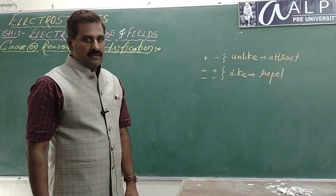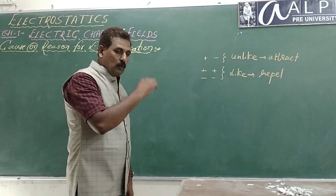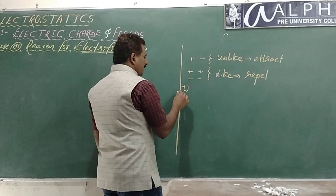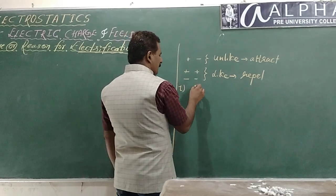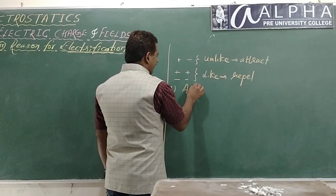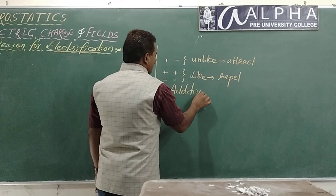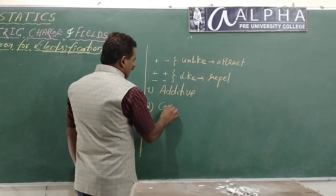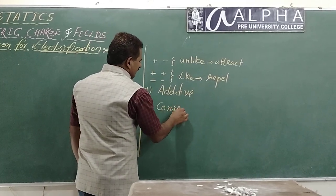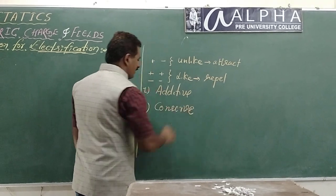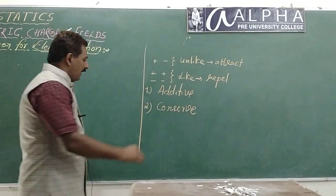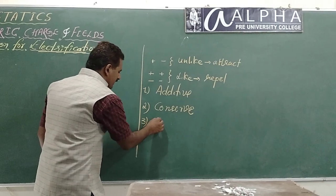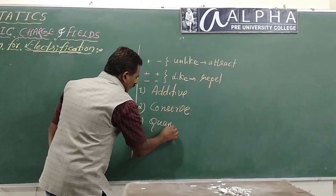And you learned some more properties of charge. Number one: the charging process is additive — additivity of charge. Second: charge is conserved — the process of charging is conserved. And the third: the process of charging is quantized.